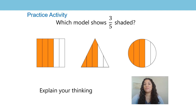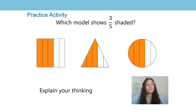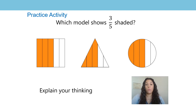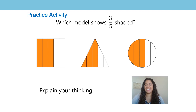This is your practice activity for this lesson. It says, which model shows 3 fifths shaded? You've got a square shape, a triangle shape, and a circle shape. Which one is showing 3 fifths shaded? Can you explain your thinking? Can you explain why or why not the models are showing 3 fifths shaded? We will go over this at the start of the next lesson.